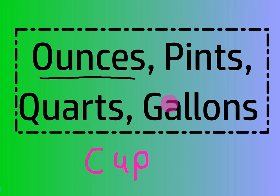So we're going to figure out how to convert all these things. We're going to use the same method we did when we did inches, feet, and yards. It's called — actually, I forgot what it's called. But basically, it's using kind of like a table. Dimensional analysis — that's the word they use in chemistry to convert units. It's the same thing in math.